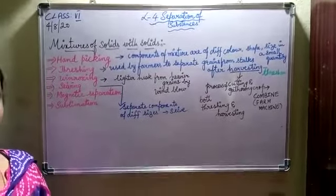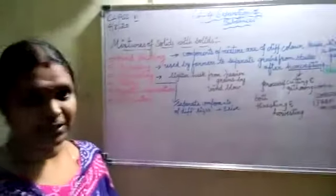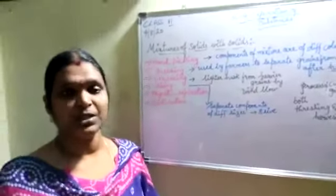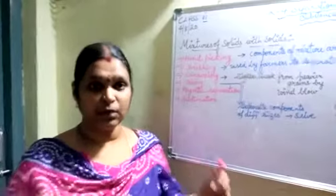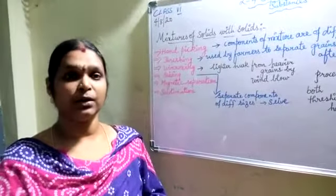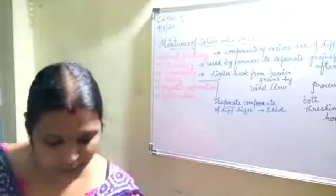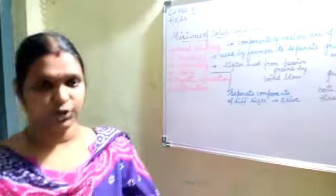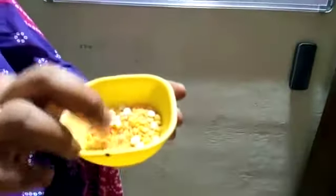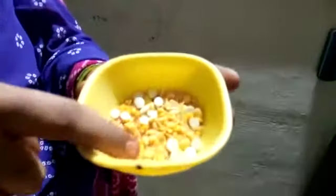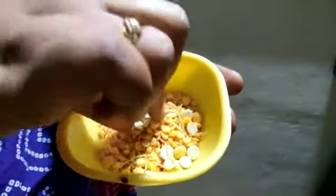This is something we generally do when we go to market. When we purchase different vegetables and come home, you can see your mother separating all the vegetables — that is nothing but hand picking. I just want to show this mixture: I have taken toor dal with some bambino, and you can see they are of different colors, shape, and size. So can I separate this easily? Yes!